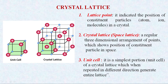So crystal lattice or space lattice is nothing but a regular three-dimensional arrangement of points. These points represent the position of constituent particles in space. It is called crystal lattice.